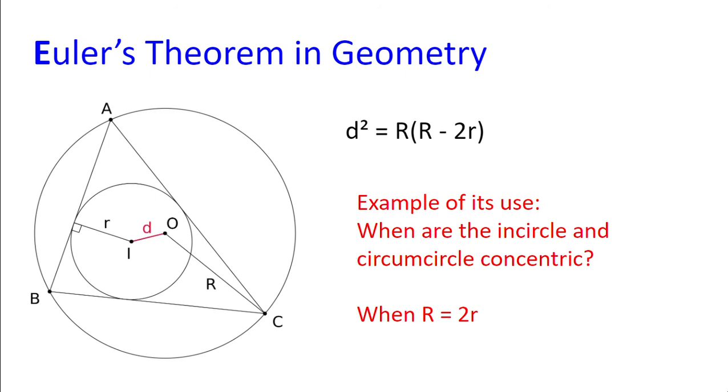We can use this fact to answer the following. When are the incircle and circumcircle concentric? The answer is when R or the radius of the circumcircle is twice the size of the radius of the incircle.